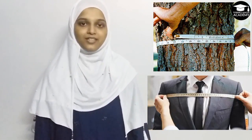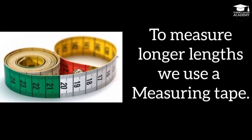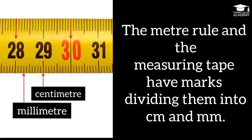For measuring curved objects like the girth of a tree or the chest of a man, we use a measuring tape. To measure longer lengths we use a measuring tape; the smallest measurement possible is one millimeter. The meter rule and measuring tape have marks dividing them into centimeters and millimeters.